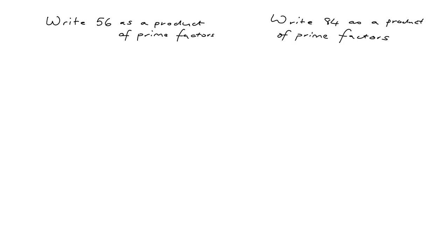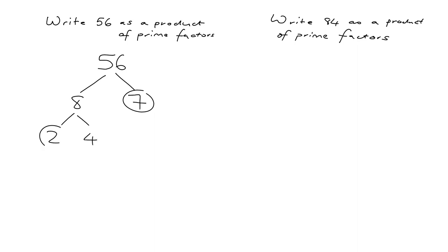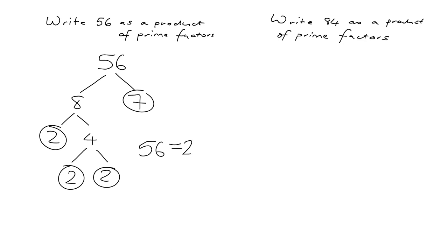Hopefully you are very familiar with this — you might have done it in a slightly different way, but you'll get the same answer. 56 is immediately 8 times 7. 7 is a prime, so I can circle it. 8 is 2 times 4, and 4 is 2 times 2. So 56 is equal to 2 cubed times 7, written as a product of prime factors.